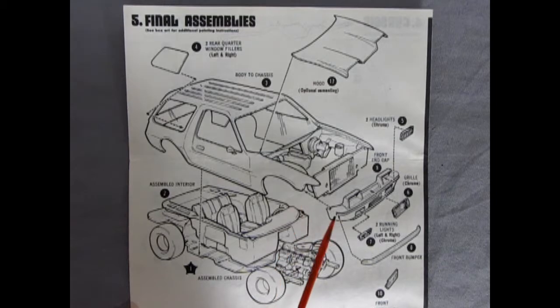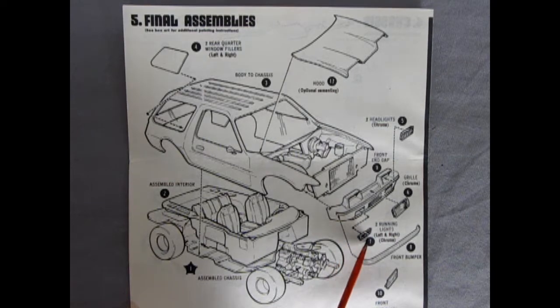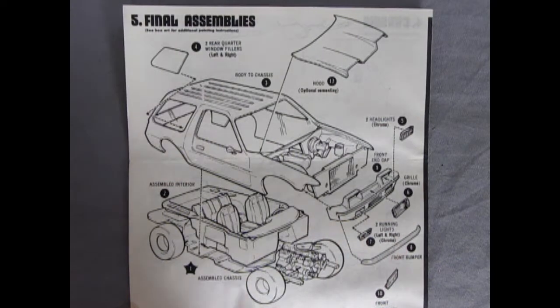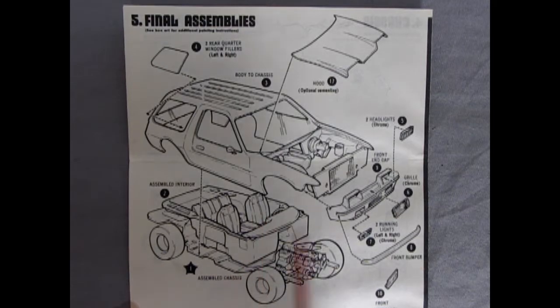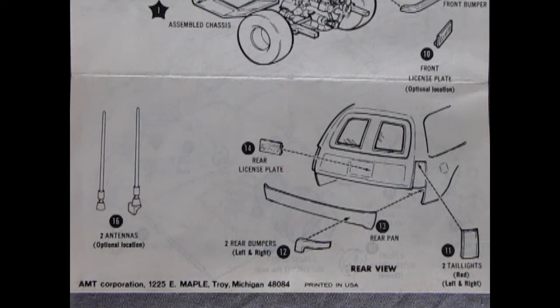Here we've got our front end cap, they call it, gluing in. That's got our headlights as well as our grille and these really cool running lights or maybe even fog lamps down below. There's our front bumper and our license plate. The assembled interior will glue onto the chassis and then the whole body will pop on in place.